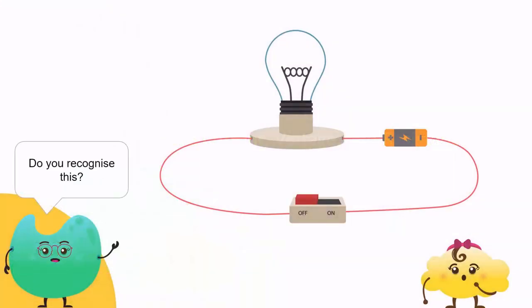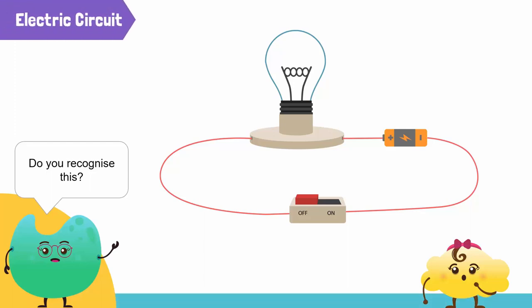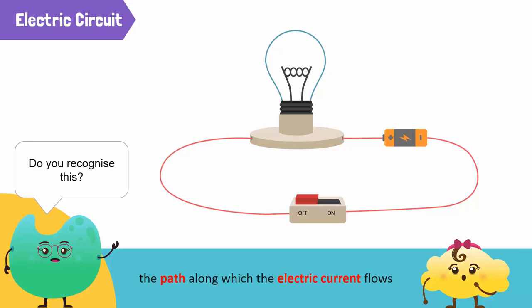Do you recognize this? It is an electric circuit. An electric circuit is the path along which an electric current flows.